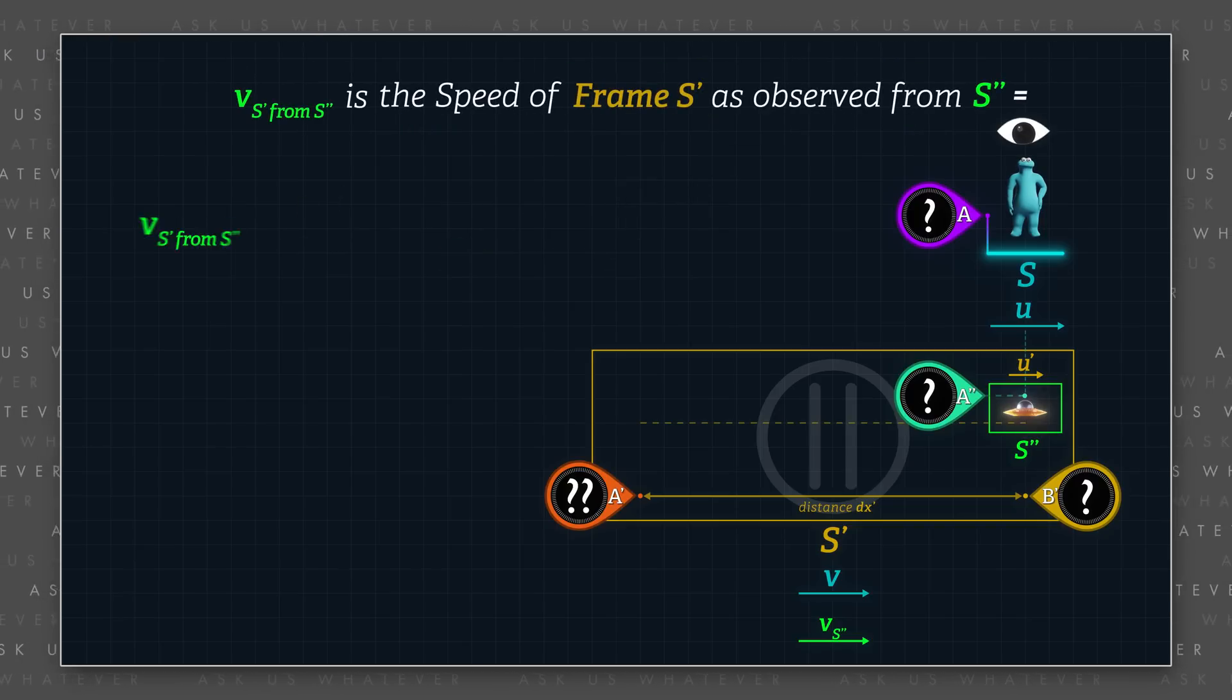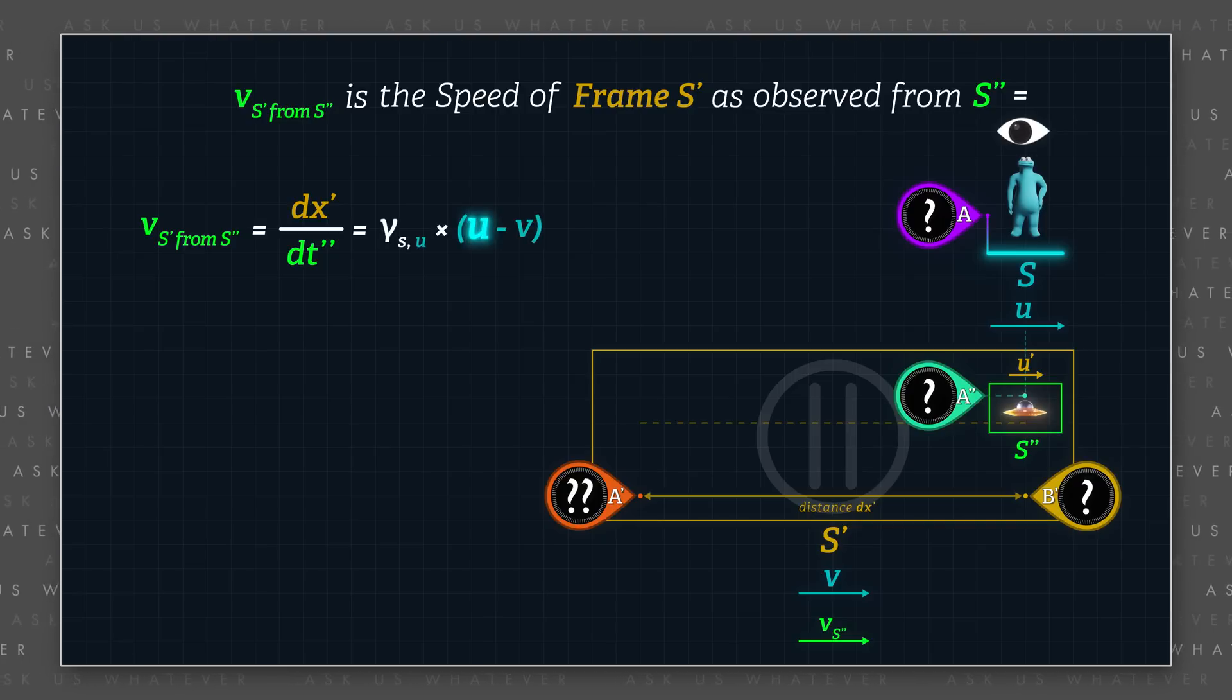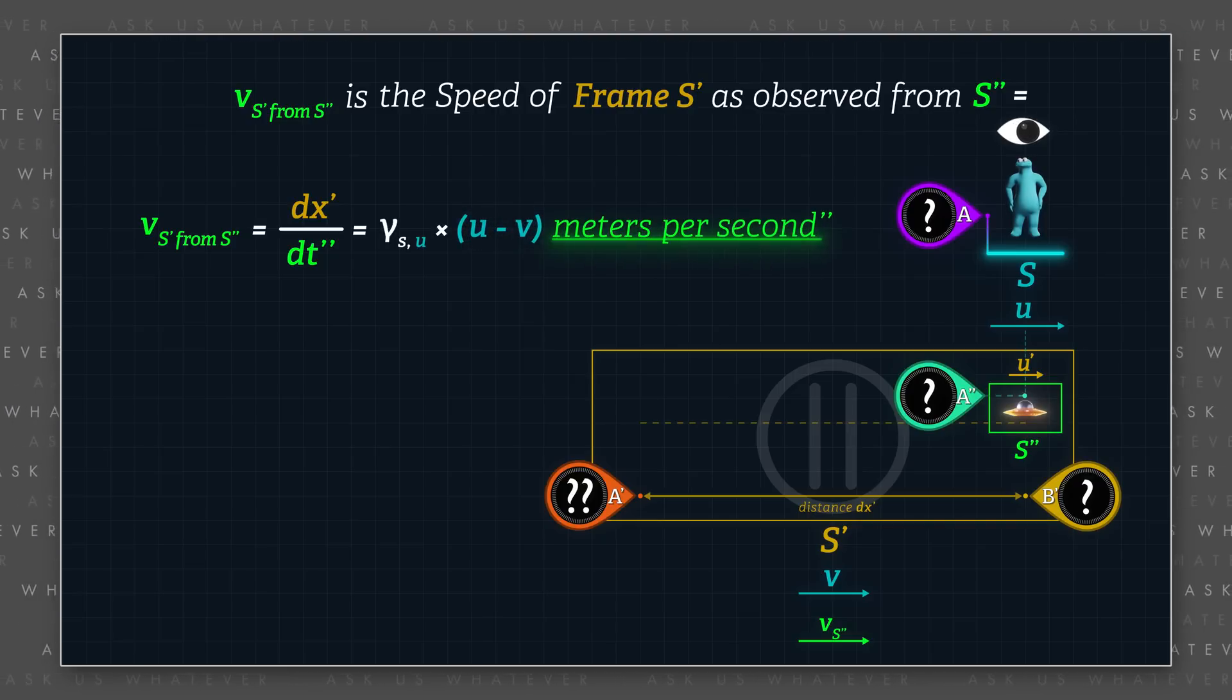And so the speed difference between frames s double prime and s prime, as measured by observers who are stationary within frame s double prime, is gamma s comma u times u minus v meters per second double prime.